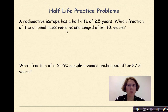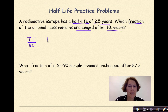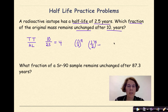Let's do some half-life practice problems. A radioactive isotope has a half-life of 2.5 years. What fraction of the original mass remains unchanged after 10 years? We take the total time and divide by the half-life: 10 years divided by 2.5 years equals 4 half-lives. To find the fraction remaining, we use (1/2)^n, where n is the number of half-lives. So (1/2)^4 equals 1/16 of the original sample remaining.